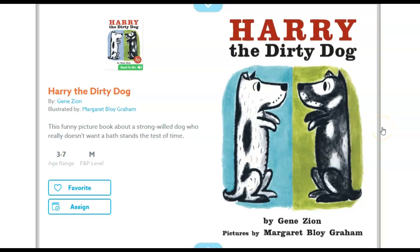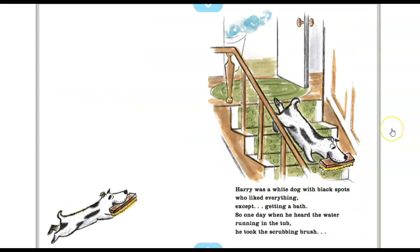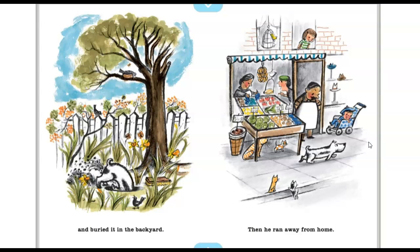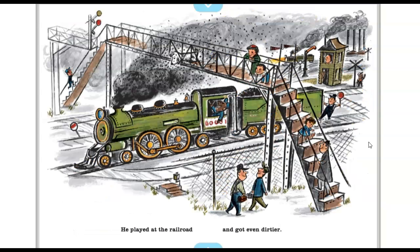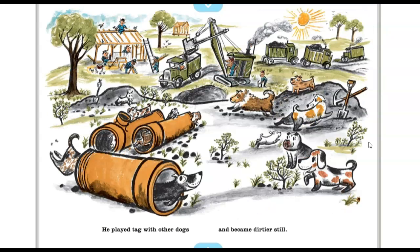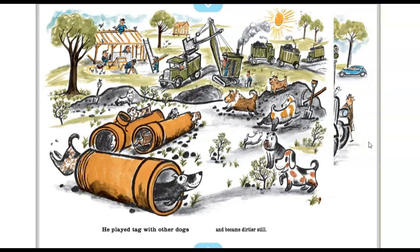Here is Harry the Dirty Dog. Challenge yourself to read out loud with me as I read. Harry was a white dog with black spots who liked everything except getting a bath. So one day when he heard the water running in the tub, he took the scrubbing brush and buried it in the backyard. Then he ran away from home. He played where they were fixing the street and got very dirty. He played at the railroad and got even dirtier. He played tag with other dogs and became dirtier still. He slid down a coal chute and got the dirtiest of all. In fact, he changed from a white dog with black spots to a black dog with white spots.